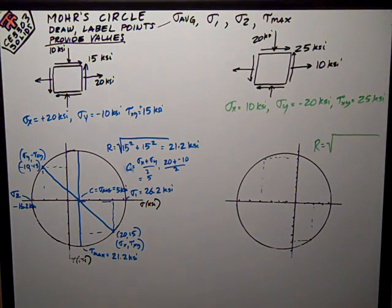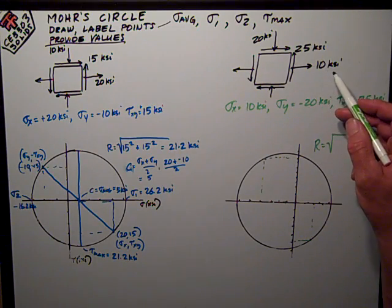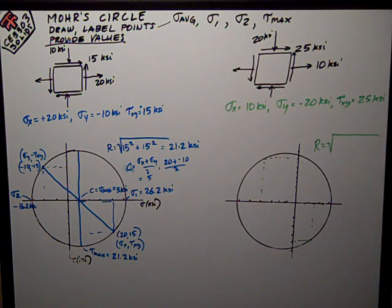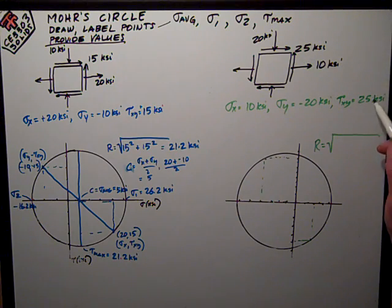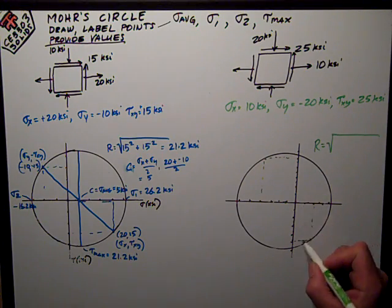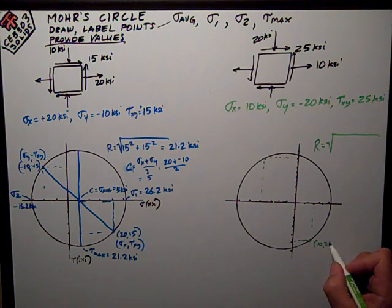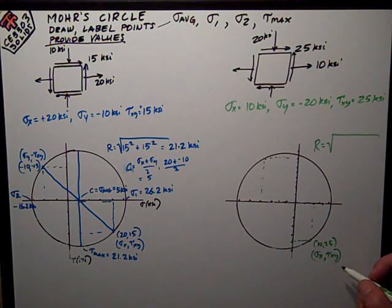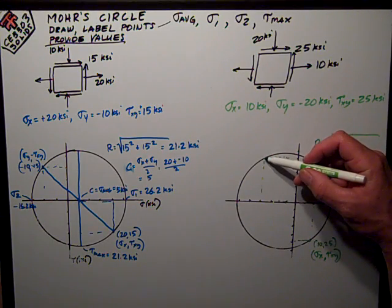For the green test, it's very similar. I've got a state of stress with positive 10 ksi for sigma x, negative 10 ksi for sigma y, and positive 25 ksi for tau xy — positive because it's up on the right side of the element. I plot sigma x at 10 and positive 25: go over 10, down 25 to that point — sigma x and tau xy at 10 and 25. Then I go and plot the opposite point, envisioning this as if the circle hadn't been pre-drawn.